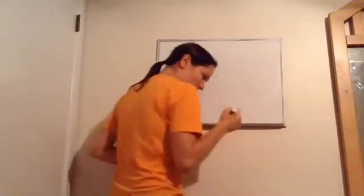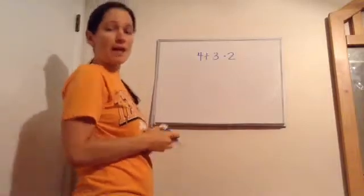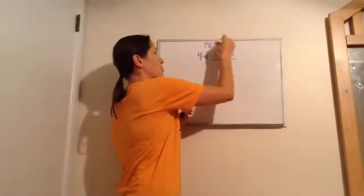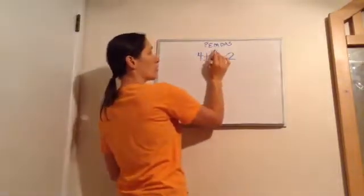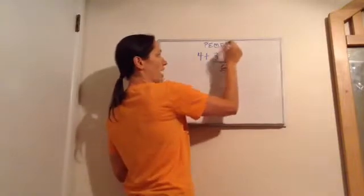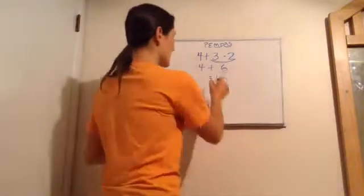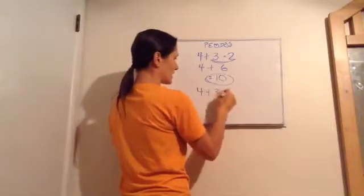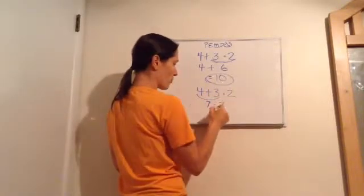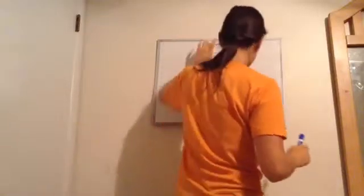Now let's do order of operations. Sometimes you'll see a problem like four plus three times two. You might think you can do this in any order, but you cannot. You must always follow the PEMDAS rules. No parentheses, no exponents, but there is multiplication: three times two is six. Then adding from left to right gives four plus six, which is ten. If you incorrectly worked left to right — four plus three is seven, seven times two is fourteen — that's wrong. Ten is correct; fourteen is incorrect.